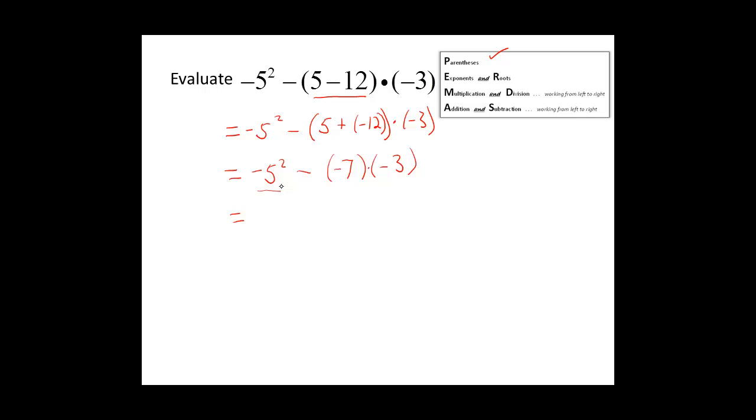The square is only affecting the 5. So this could be written as 5 times 5 with the negative out in front. Every time we make a little change, we write the rest of the problem down.